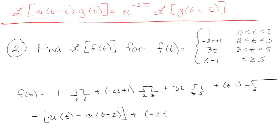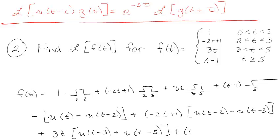So this is going to be u of t minus u of t minus 2. So that's times 1, but that's cool. Then we have this guy negative 2t plus 1, and it's u of t minus 2 minus u of t minus 3. And then we've got 3t, u of t minus 3 minus u of t minus 5, and then t minus 1 times u of t minus 5.